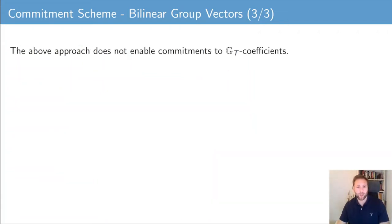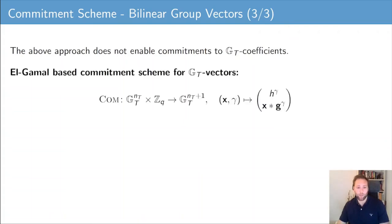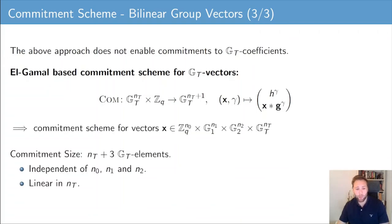The pairing-based generalization of the Pedersen vector commitment scheme does not allow a prover to commit to Gt coefficients. For this, we apply an ElGamal-based commitment scheme. This commitment scheme is homomorphic, and we can combine it with the commitment scheme for bilinear group vectors with coefficients in Zq, G1, G2, and Gt. Note however that the ElGamal-based commitment scheme produces commitments of size linear in the committed vector, so it is not compact. It is compact in N0 and N1 but not compact in N2, the Gt coefficient dimension.